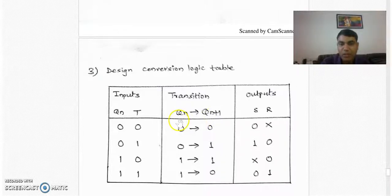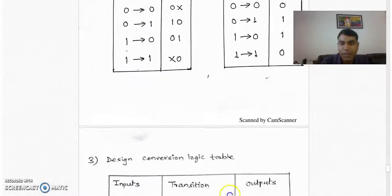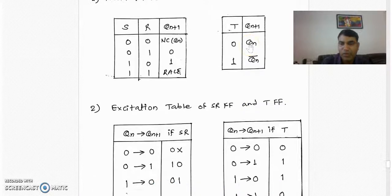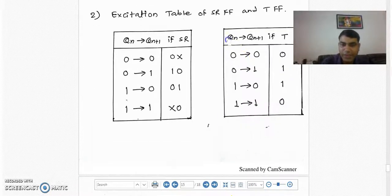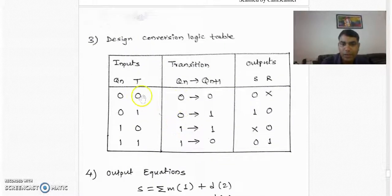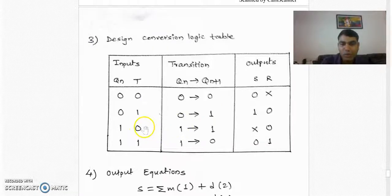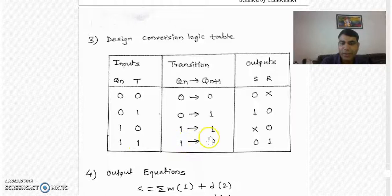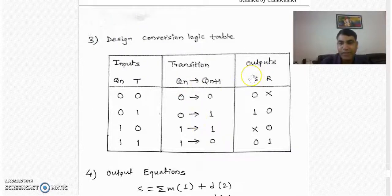We use the T flip-flop truth table: when T is 0, the next state output is Qn as it is. When T is 1, the next state output is Qn-bar. So in the conversion logic table, when T is 0, we copy Qn as it is into the next state. When T is 1, we take the complement of Qn as the next state. For instance, when T is 1 and Qn is 1, the next state is 0. Once we have the transition column, we can find the SR states from the excitation table of SR flip-flop.